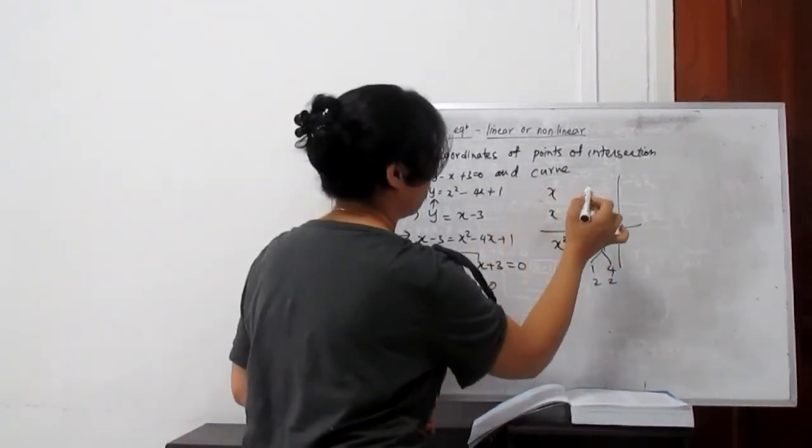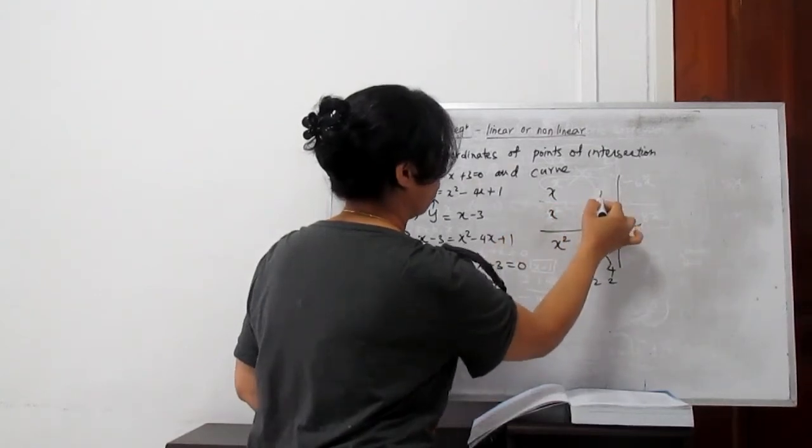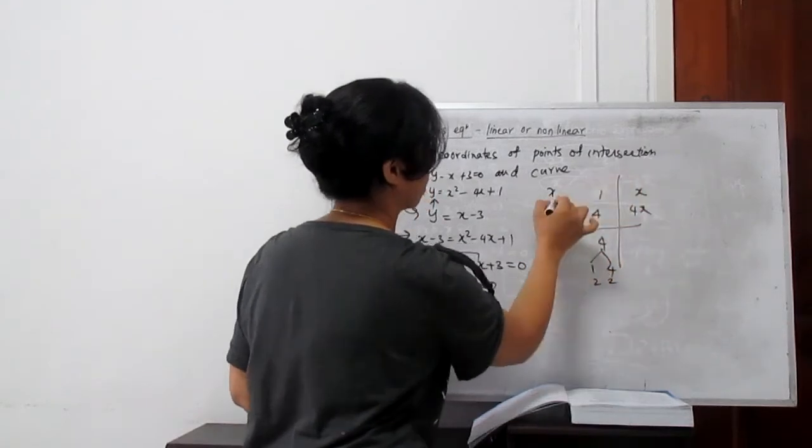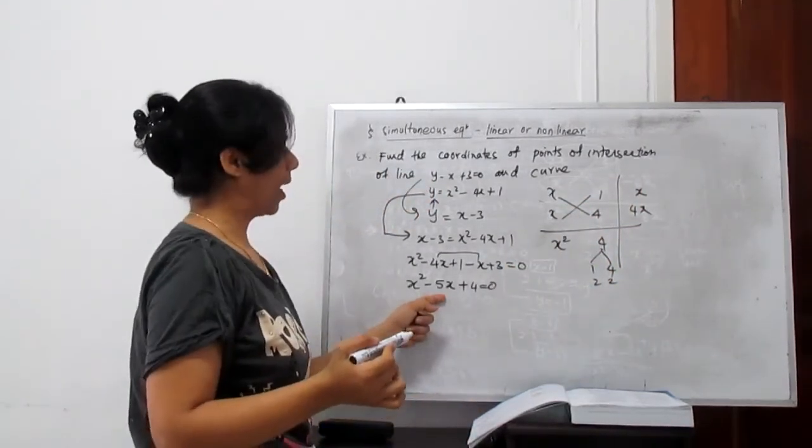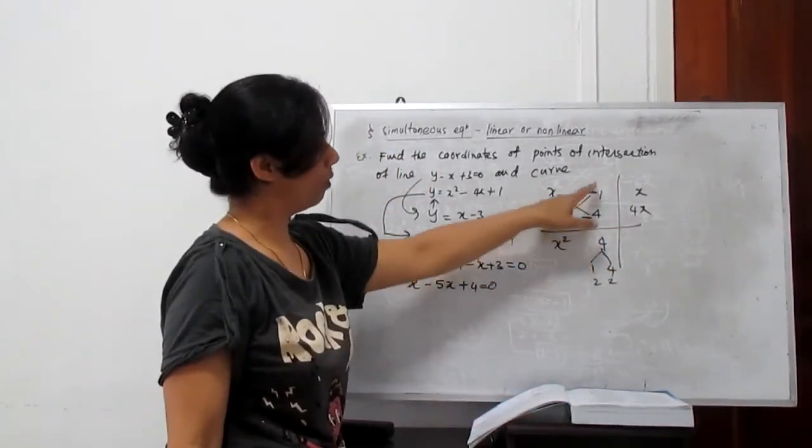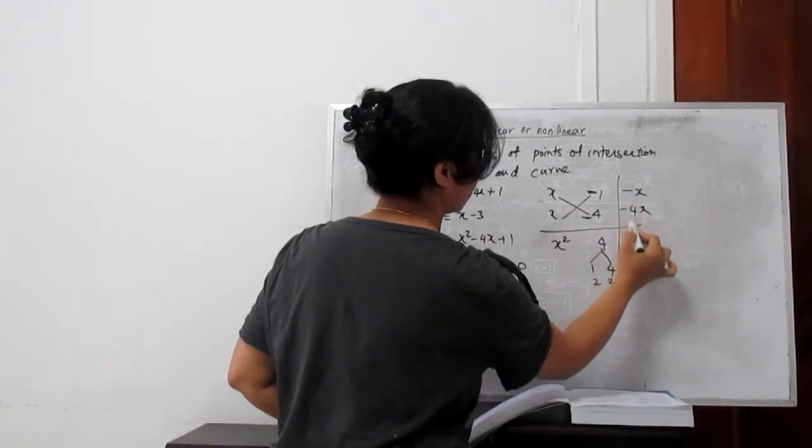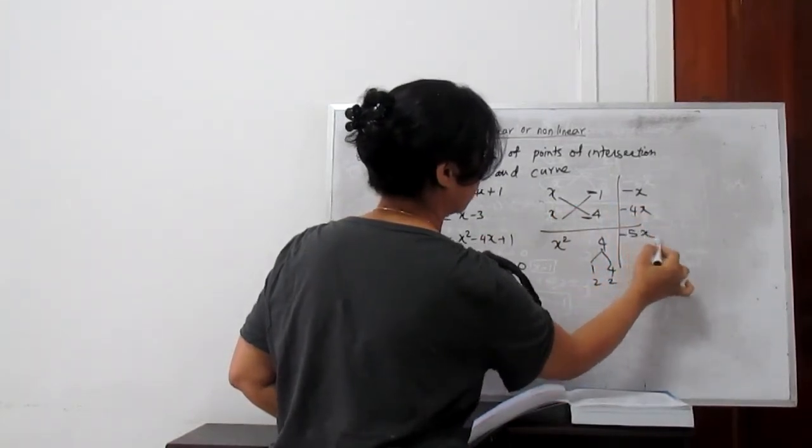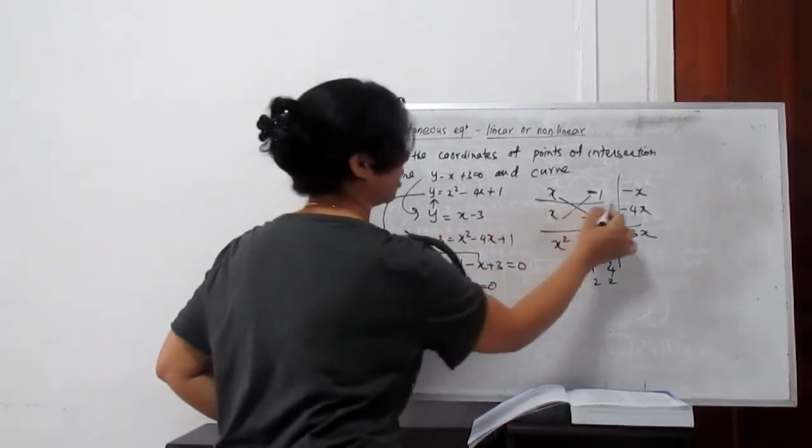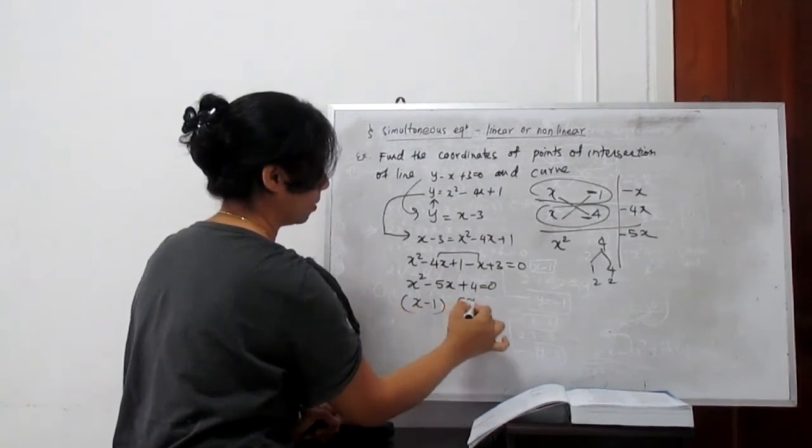So let's see. If I put here minus 1 and minus 4, so this gives 4x, this gives x. But it's negative. So we need to put both negative because this 4 is plus. So minus times minus is plus. And with this, this is minus x minus 4x, so this becomes minus 5x. Clear? Minus 5x. So our factors are this: x minus 1 and x minus 4.